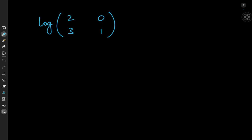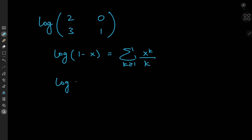It's defined in analogy to how we define the logarithm as an infinite series. Recall that the logarithm of 1 minus x can be expanded as the sum over the positive integers k of x to the k divided by k. So translating this into matrix form, we have the logarithm of I minus M equal to the sum over k of M to the k divided by k.